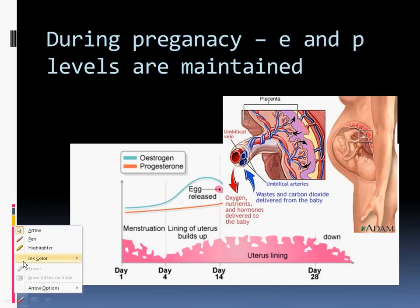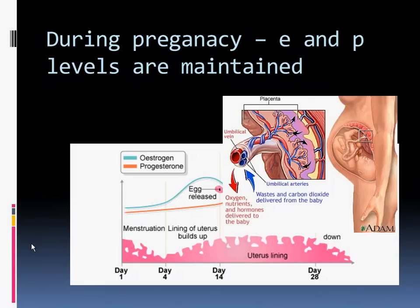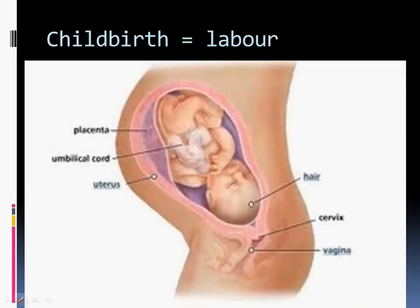So during pregnancy, your estrogen levels and progesterone levels are going to be maintained, meaning we're not going to have any shedding of the uterine lining because these estrogen and progesterone levels are going to stay high, which would have a negative feedback effect on the brain and not cause an increase in FSH and LH. So around month three, the placenta will take over the production of estrogen and progesterone, and at that time, the corpus luteum will disintegrate.